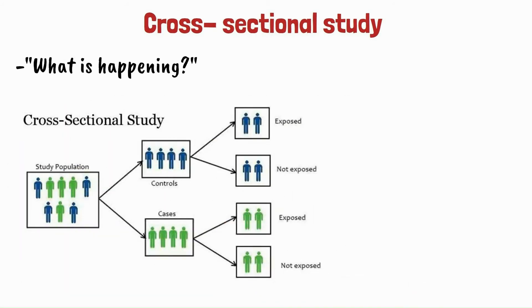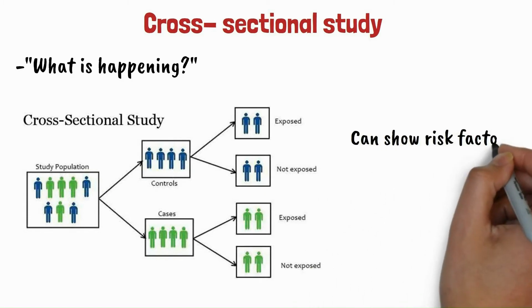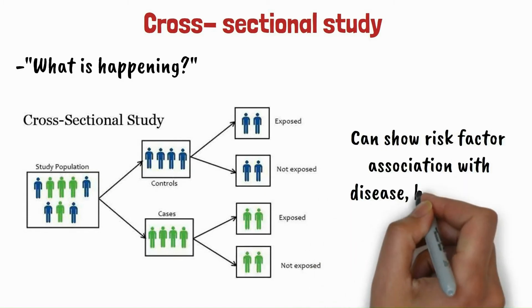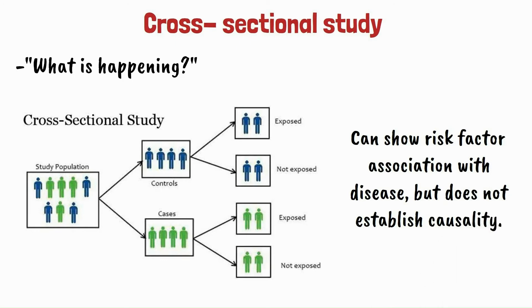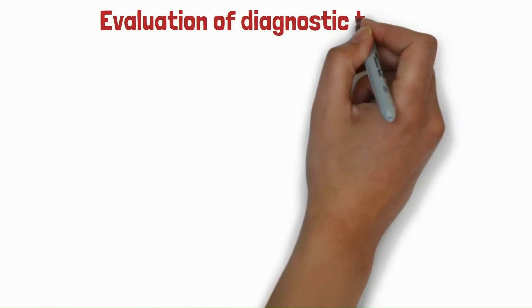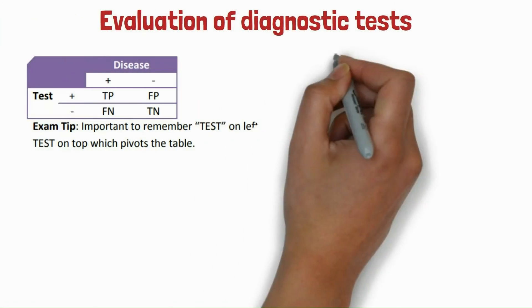Cross-sectional study — this study asks 'what is happening?' It is observational and collects data from a group of people to assess the frequency of disease and related risk factors at a particular point in time. It can show risk factor association with disease but does not establish causality.